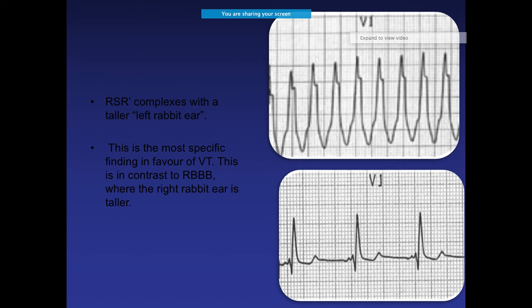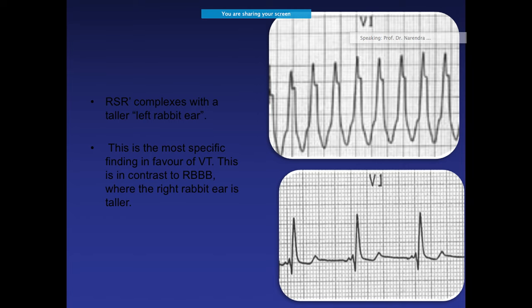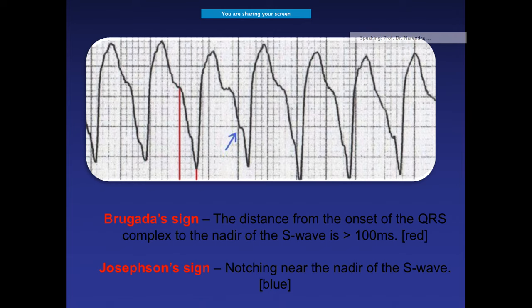To differentiate VT from right bundle branch block, use the rabbit ear sign. In RBBB you expect a left rabbit ear sign. If instead you see a right rabbit ear sign, that indicates VT — remember it is the opposite. So right rabbit ear sign equals VT.